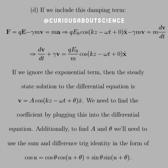For the solution we can use variation of parameters. If we ignore the exponential transient term and solve for the steady state solution, we find that V = A cosine(kz − ωt + θ) in the x-direction, and we need to find the coefficient A by plugging this into the differential equation.